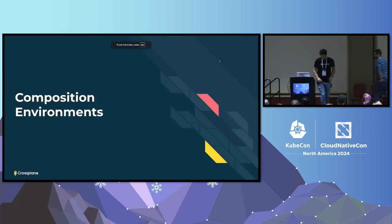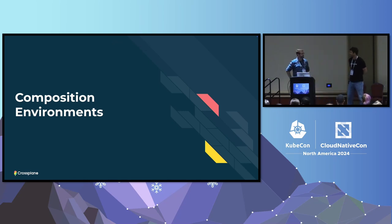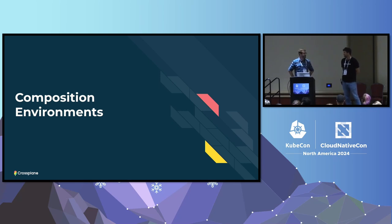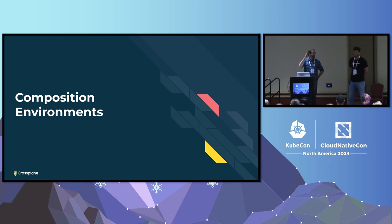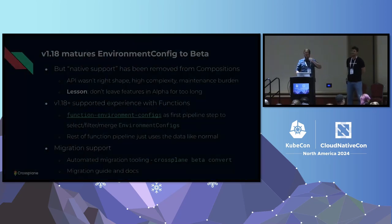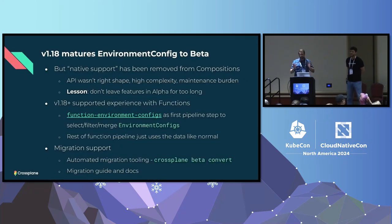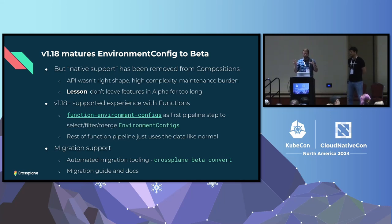I'm starting to see a theme in the demos we've done today — showing things not working and Crossplane getting better over time, at least going in that direction. Things are getting better in Crossplane. There is news about environment configs and composition environments I want to share. The EnvironmentConfig type in Crossplane — the data type in the API — has been matured in the 1.18 release to beta. But at the same time, native support within compositions for that type has been removed.